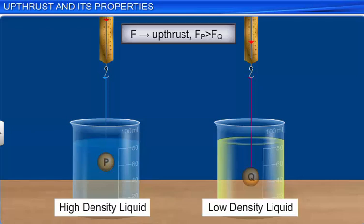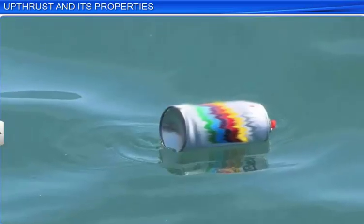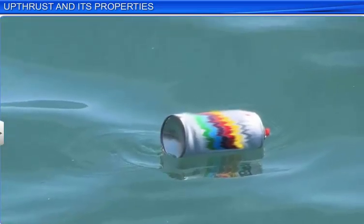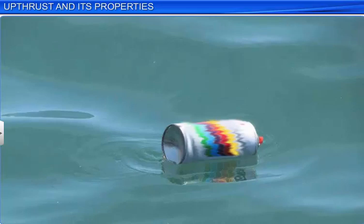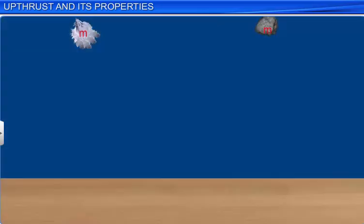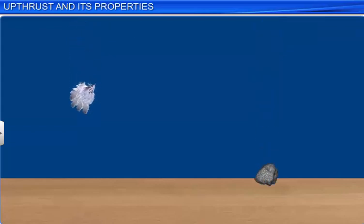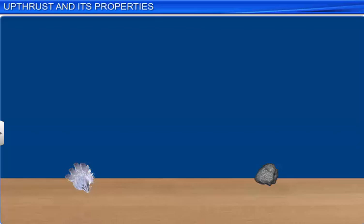When you put an empty can with the lid on into water, it floats. This is due to the upthrust in the water, since the volume of the can is more. Similarly, if a bunch of feathers and a stone of the same mass are allowed to fall through air, the stone comes down faster than the bunch of feathers. The reason is that the upthrust due to air on the bunch of feathers is greater than that on the stone, because the volume of the feathers is more than that of the stone.